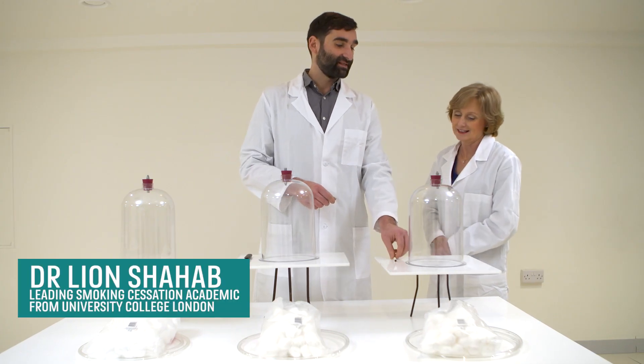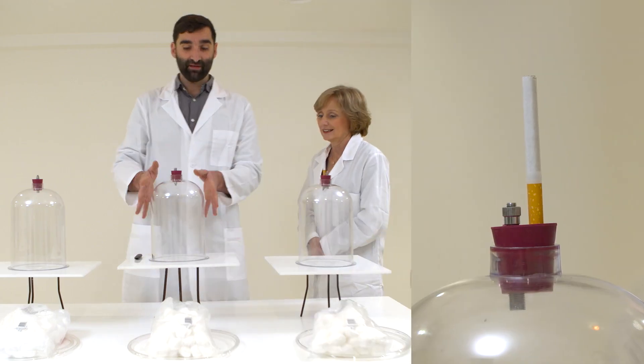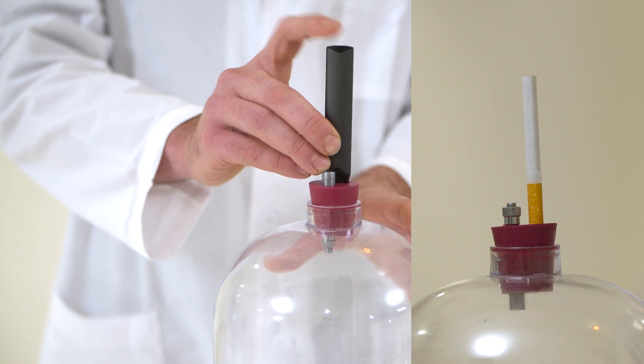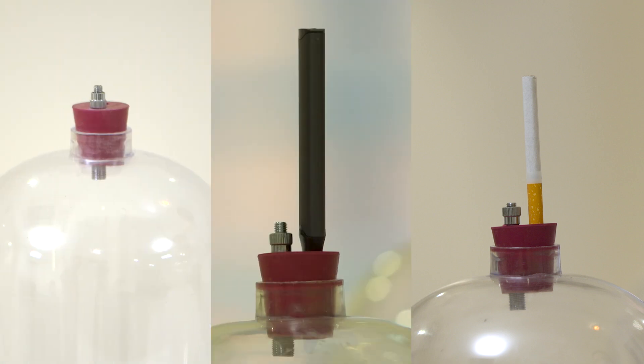What we're going to do is have one bell jar set up to smoke the average number of cigarettes smoked by a smoker each month, and then we have another bell jar through which we draw vapor from an e-cigarette for the same amount of time, and then as a control condition we have clear air to demonstrate not smoking or vaping. So let's see what's going to happen.